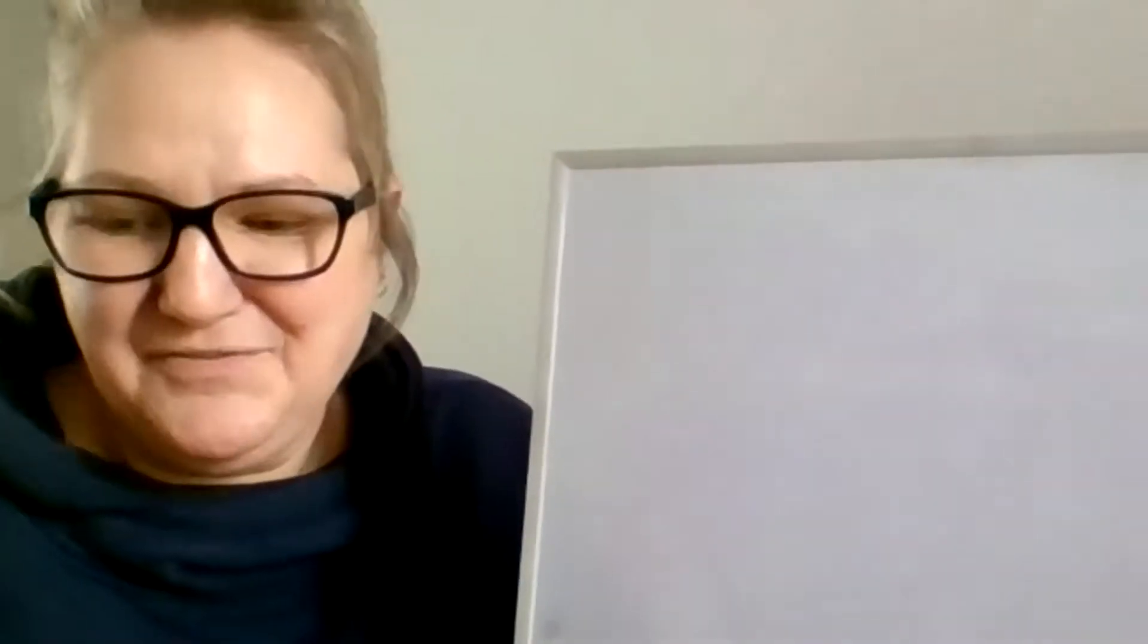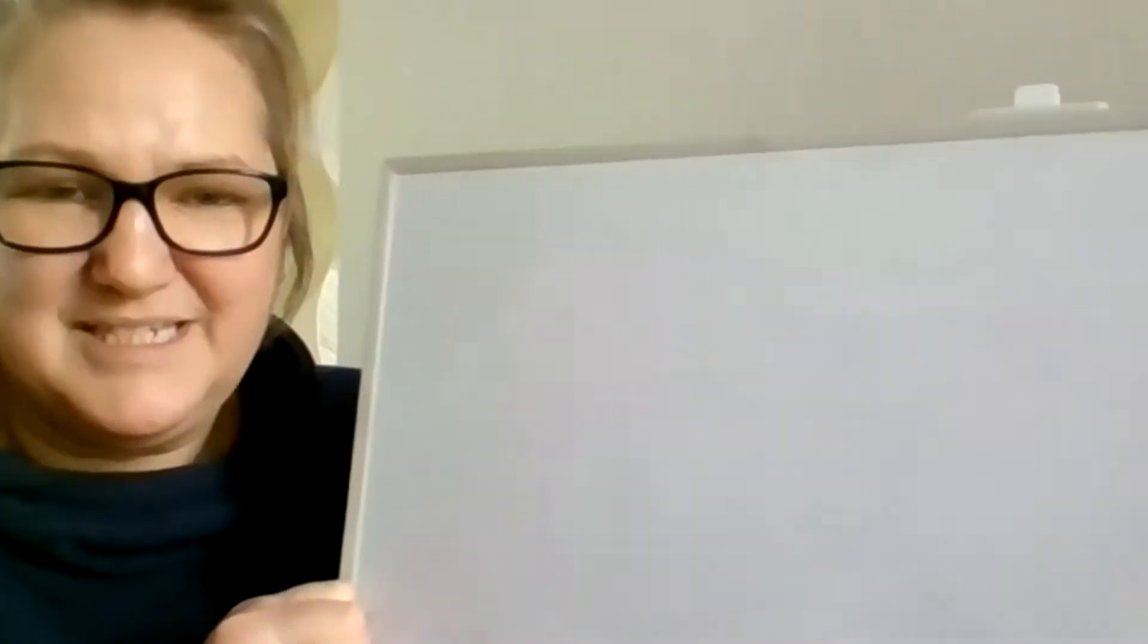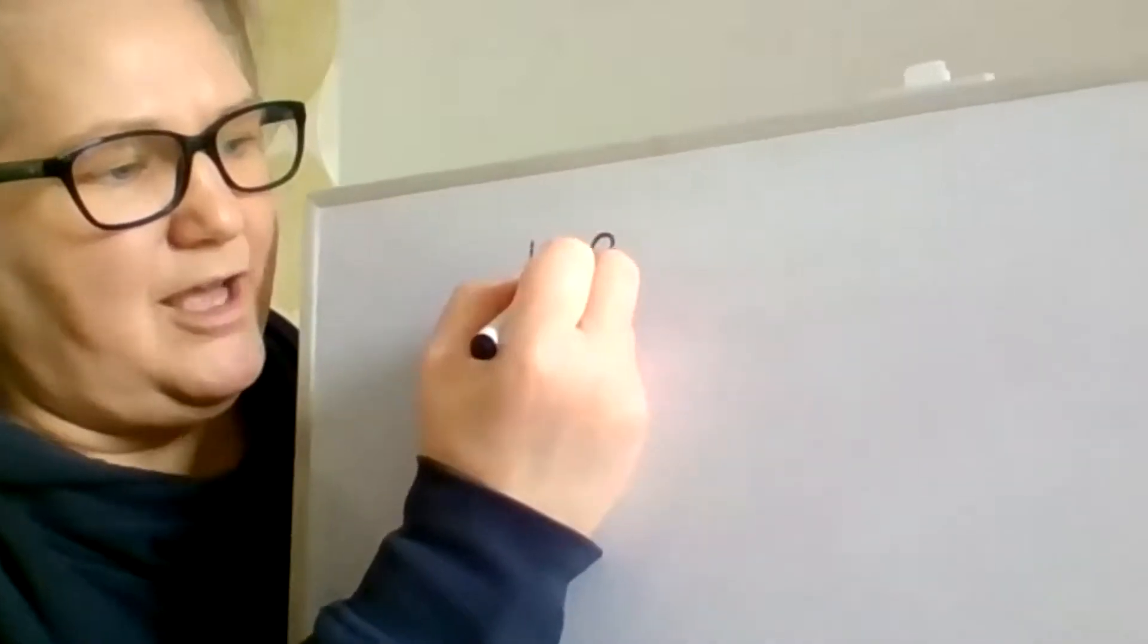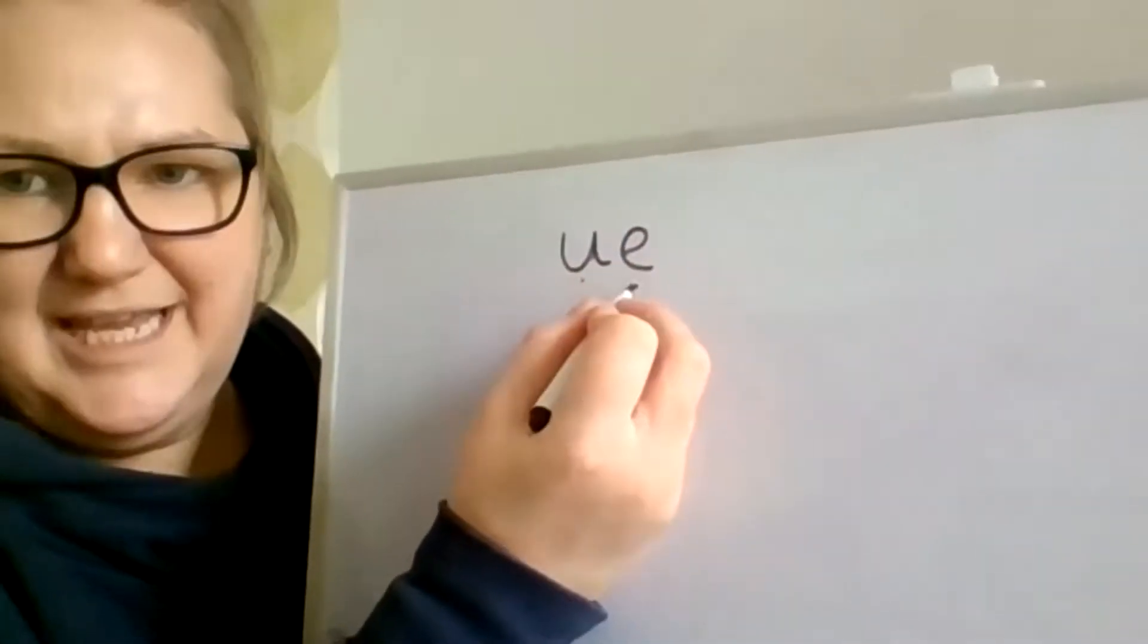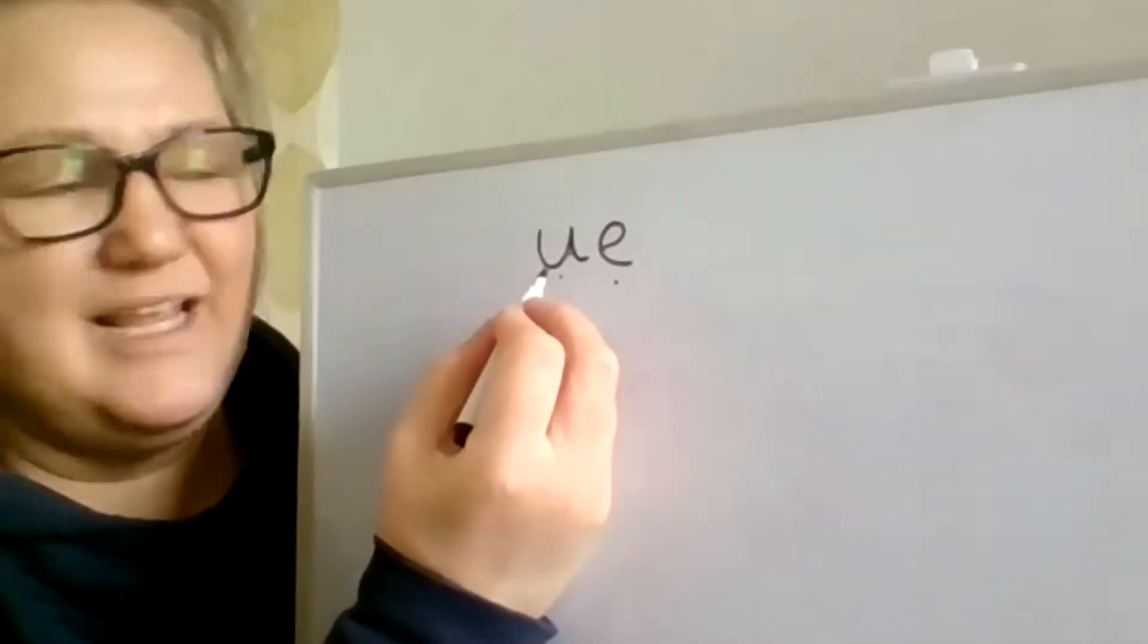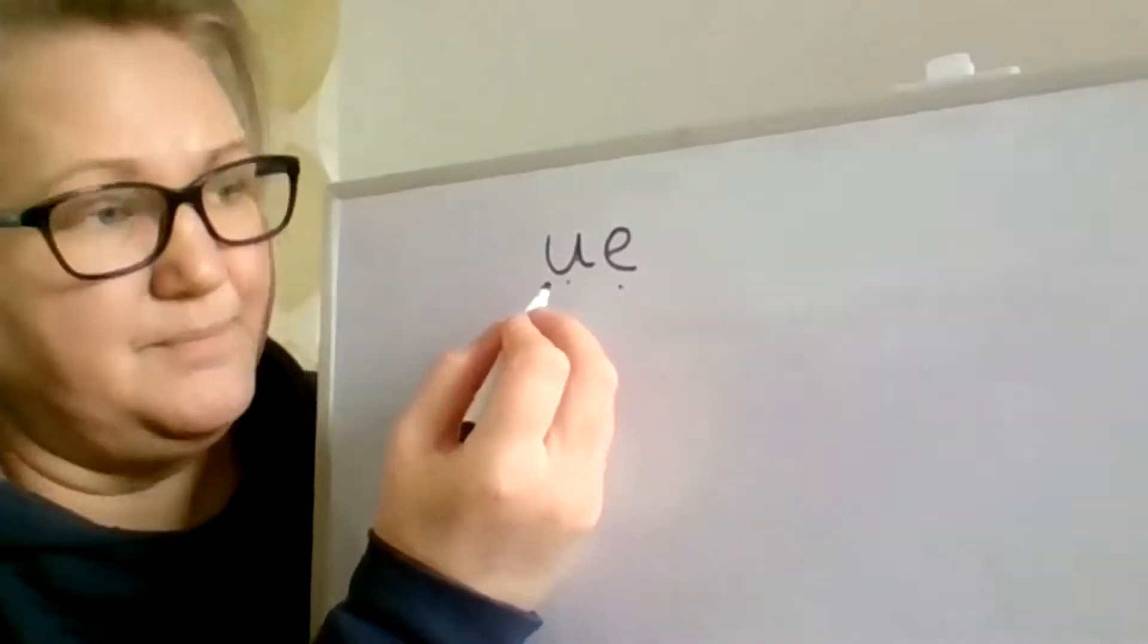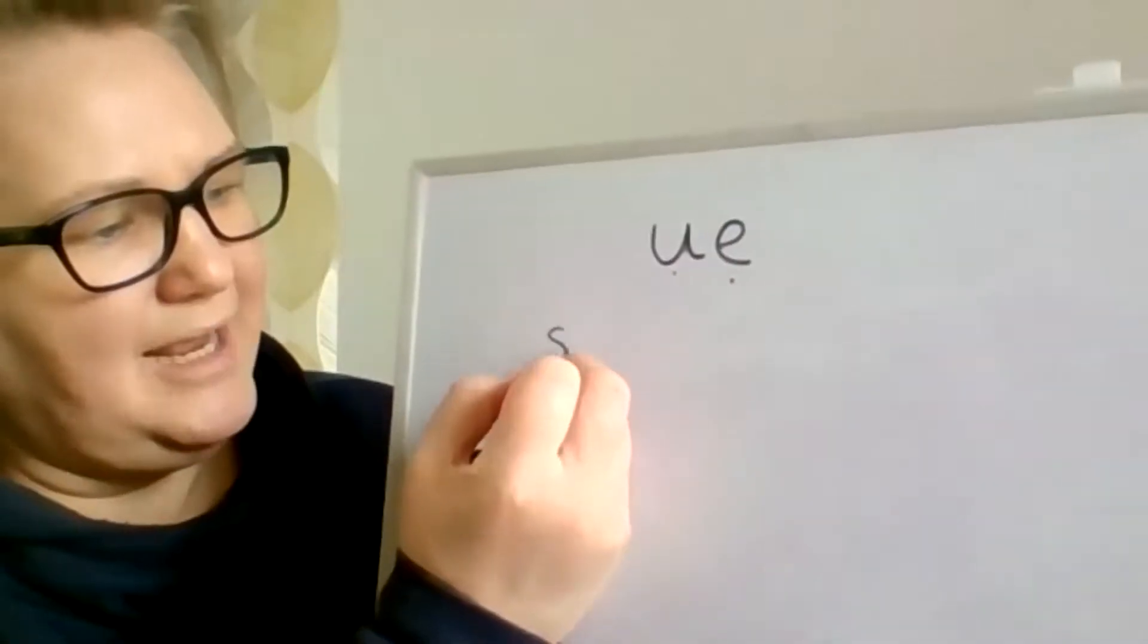Okay, so hopefully you have told your adult some of the words, and we can read some together. Now, the ue sound, the u and the e, normally can come in the middle or end of a word. Okay, so we could have the word...